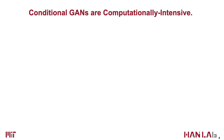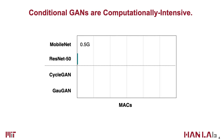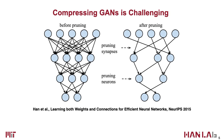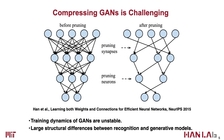Though Conditional GANs have enabled many vision and graphics applications, they are computationally intensive for mobile deployment. Compared to image classifiers, Conditional GANs require two orders of magnitude more computations. Compressing generative models is challenging due to two reasons: first, the GAN training is unstable; second, recognition and generative models have different structures, making it hard to apply traditional methods directly, such as pruning.